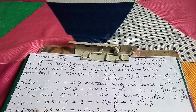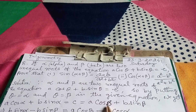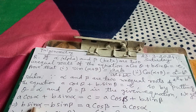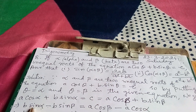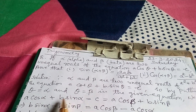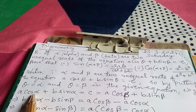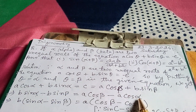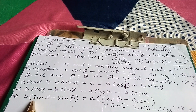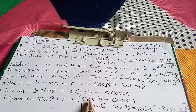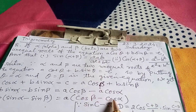Now, bringing the sine terms together and cosine terms together — the sine terms come to the left side so it becomes minus: b·sinα − b·sinβ = a·cosβ − a·cosα. Taking b common on the left gives b(sinα − sinβ), and taking a common on the right gives a(cosβ − cosα).